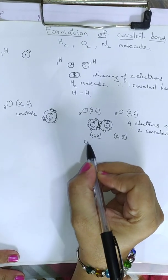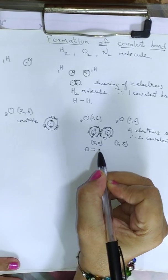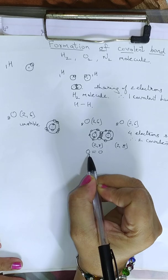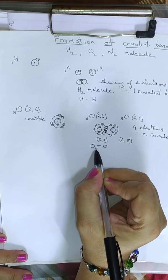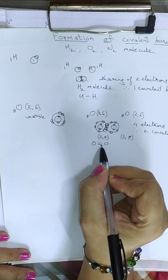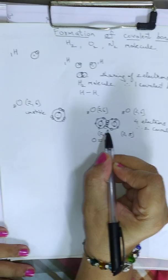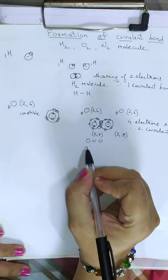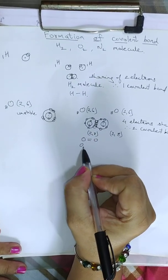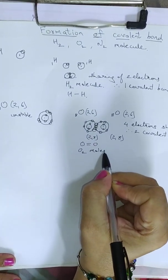Oxygen and oxygen combine together by the formation of 2 covalent bonds — that is, by sharing of 4 electrons. Hence, the O2 molecule is formed.